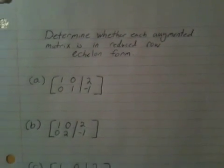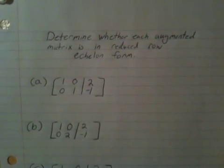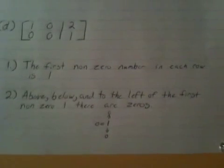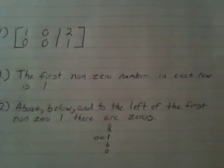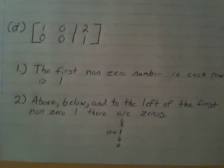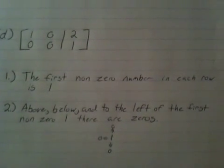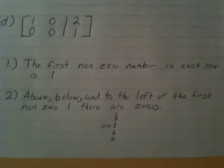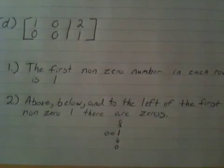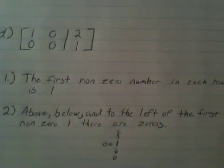Determine whether each augmented matrix is in reduced row-echelon form. In order for them to be in reduced row-echelon form, we must satisfy two criteria: first, the first non-zero number in each row is 1, and second, above, below, and to the left of the first non-zero 1, there are zeros. This applies inside the coefficient matrix.